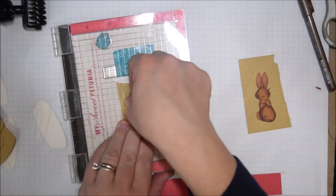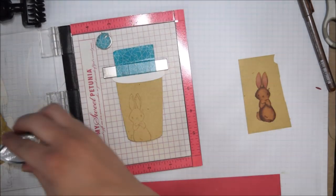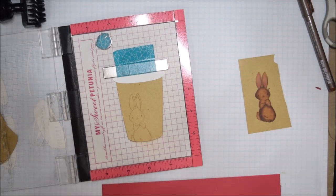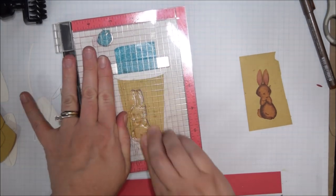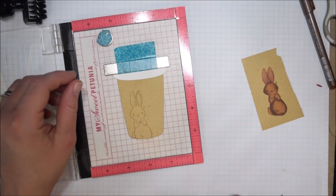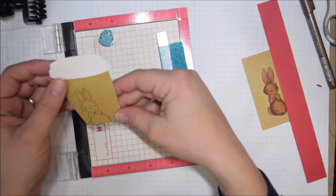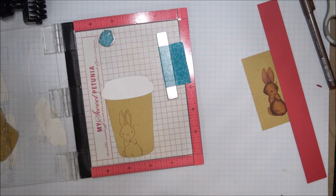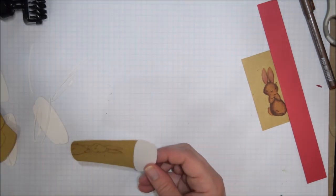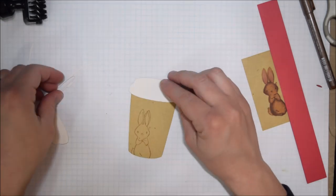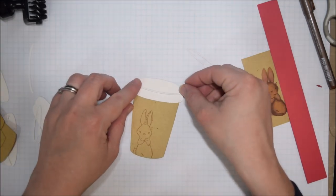I am using Desert Sand Memento ink and I'm stamping on craft cardstock. I don't actually know which craft cardstock this is - it may be the Neenah Desert Storm, but I just wanted to play around with something different with my Copics this week.